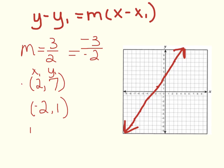I have Y minus, and what is our Y₁ value? It is 7. So, we have Y minus 7 equals, and our slope is positive 3 over 2. So, we have just written our equation of this line in point slope form.